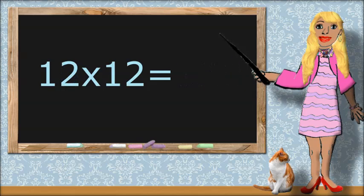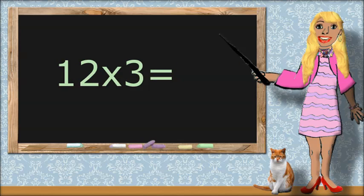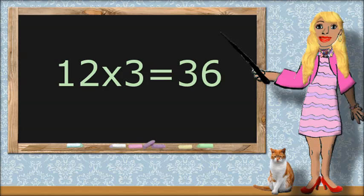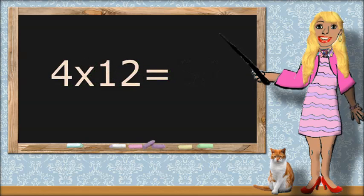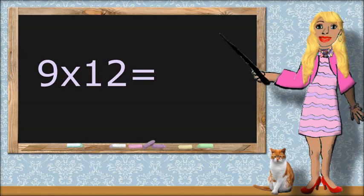Twelve times twelve equals one hundred and forty-four. Twelve times three equals thirty-six. Four times twelve equals forty-eight. Nine times twelve equals one hundred and eight.